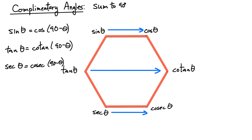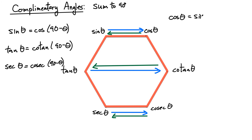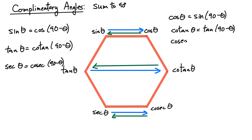Going the other way with horizontal lines gives us three more complementary angle relationships: cosine of the angle theta equals sine of 90 minus theta; cotangent of the angle theta equals tangent of 90 minus theta; and cosecant of the angle theta equals secant of 90 minus theta. That's six more identities involving complementary angles.